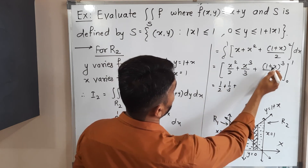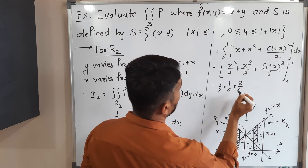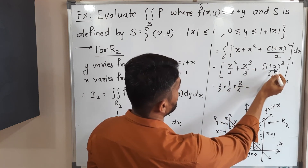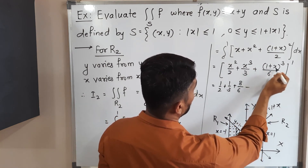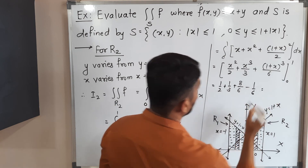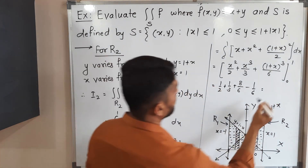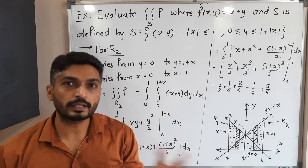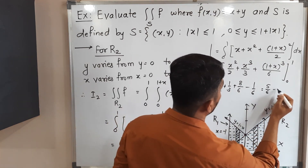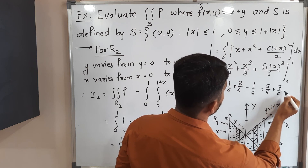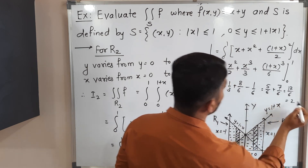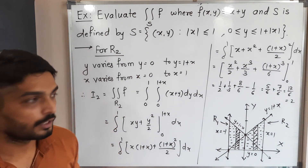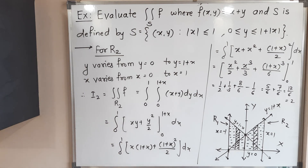Integrating with respect to X from 0 to 1: integration of X is X squared by 2, of X squared is X cubed by 3, and of (1 plus X) squared by 2 gives (1 plus X) cubed by 6, evaluated from 0 to 1. Putting upper limit 1: 1/2 + 1/3 + 8/6. Putting lower limit 0: 0 + 0 + 1/6. Subtracting: (5/6 − 1/6) + 8/6 = ... combining gives 12/6 equal to 2. So I2 equal to 2.